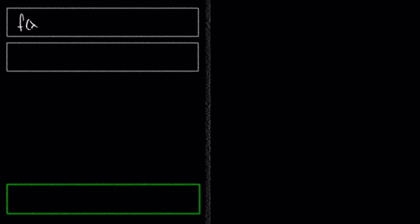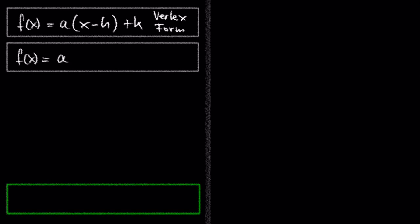In the previous videos, we learned that f of x equals a times (x minus h) plus k is the vertex form of a quadratic function, and that f of x equals ax squared plus bx plus c is the standard form of a quadratic function.